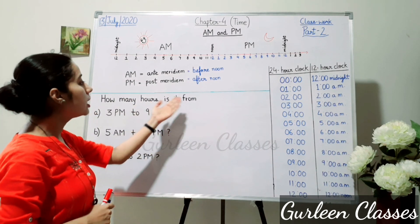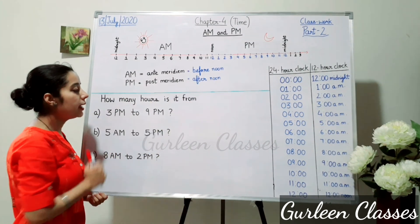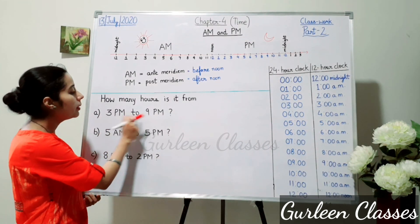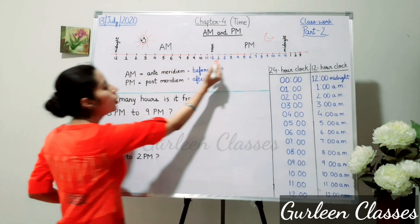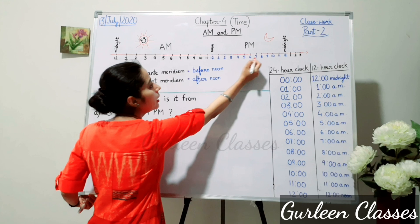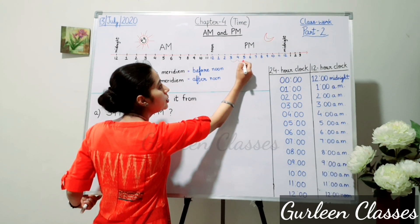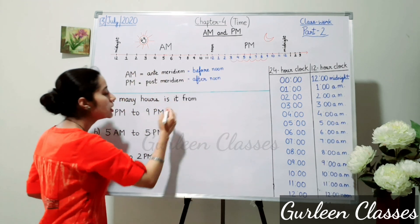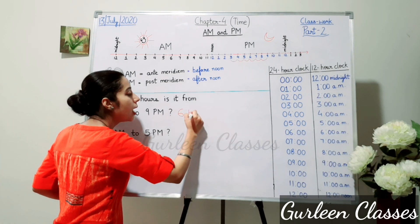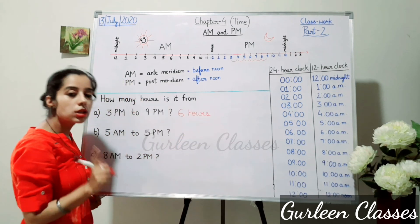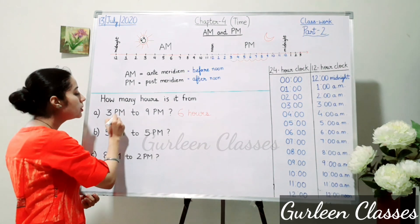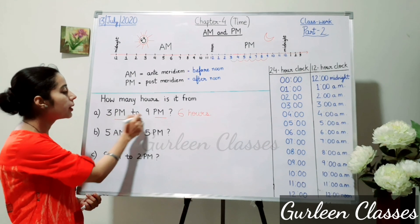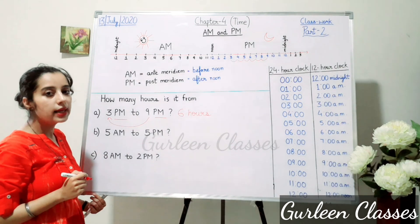How many hours is it from 3 PM to 9 PM? To solve this, let us use the timeline. Counting from 3 PM to 9 PM. Students, you can do it a simple way — since both are PM, simply subtract: 9 minus 3, and the answer will be 6 hours.